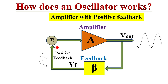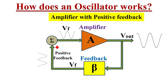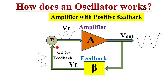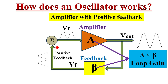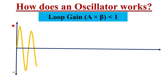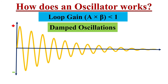Now, if we disconnect the input signal, this feedback signal Vf will act as the input to the amplifier circuit. So after removing the input voltage, whether we will get sustained oscillations or not depends on the product of A and beta, which is known as the loop gain of the oscillator. If this loop gain A·beta is less than 1, the electrical oscillation amplitude will go on decreasing over a period of time and will die out. These types of oscillations are called damped oscillations.